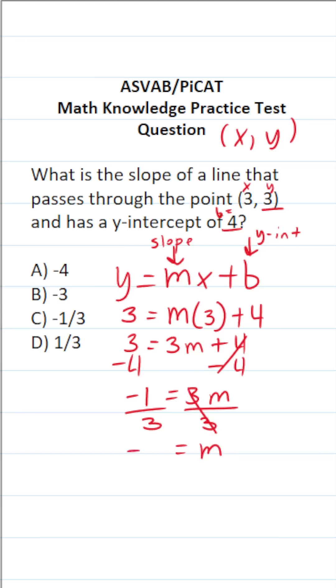This says m is equal to negative 1/3. And if you prefer it, you can write it like this: m equals negative 1/3. Again, m refers to the slope, so we know our slope is going to be negative 1/3. The answer to this one is C.